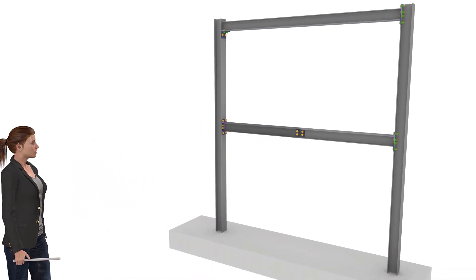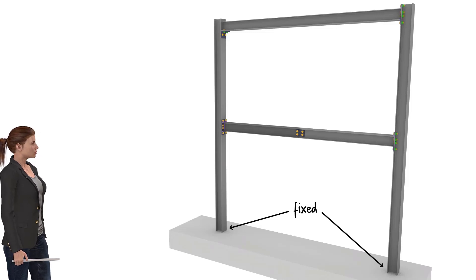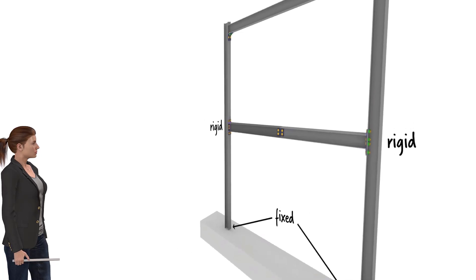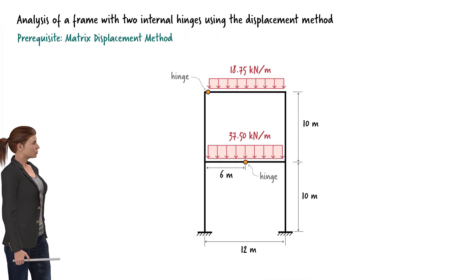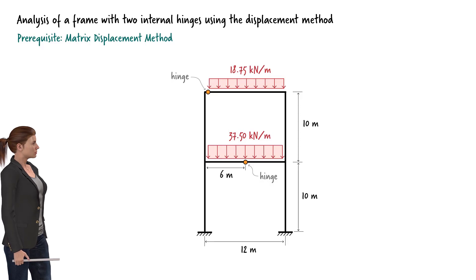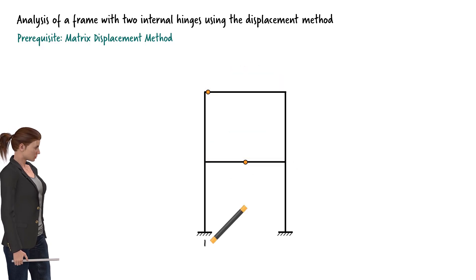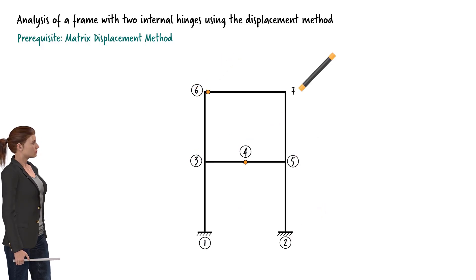The connections at the base of the frame are fixed, and the remaining beam-column connections are considered rigid. Here is a line drawing of the frame. To analyze the structure using the displacement method, we need to label its nodes and members. Let's number the nodes 1 through 7, then label each member using its end node numbers.